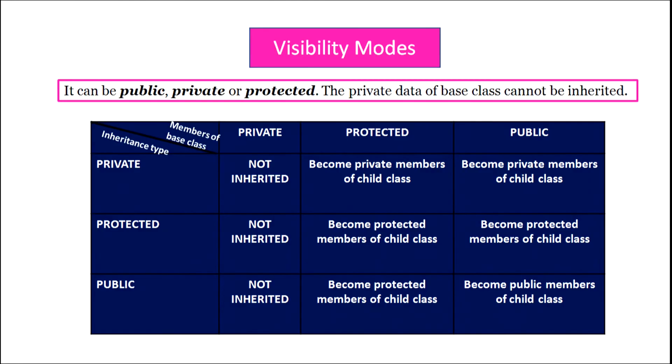In public inheritance, private members of the base class are not inherited. Protected members of the base class become protected members of the child class, and public members of the base class become public members of the child class.